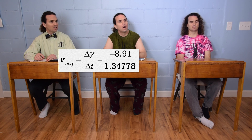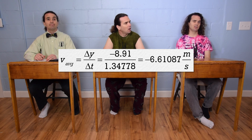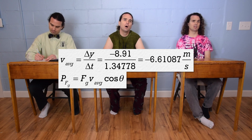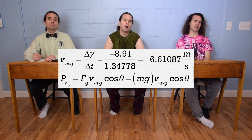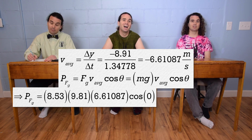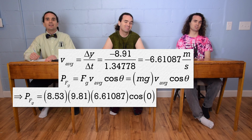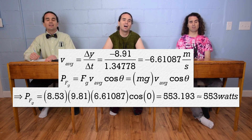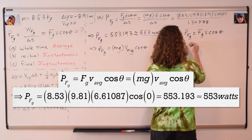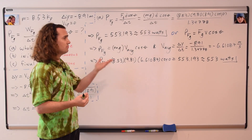We could also have solved it by first finding the average velocity using average velocity equals displacement divided by change in time: negative 8.91 divided by 1.34778, which is negative 6.61087 meters per second, and then plugging that into the power equation: power delivered by the force of gravity equals force of gravity times average velocity times cosine theta. Substituting gives 8.53 times 9.81 times positive 6.61087 — positive because we use the magnitude of the velocity — times cosine of zero, which also gives 553.193, or 553 watts. Both approaches give the same answer.